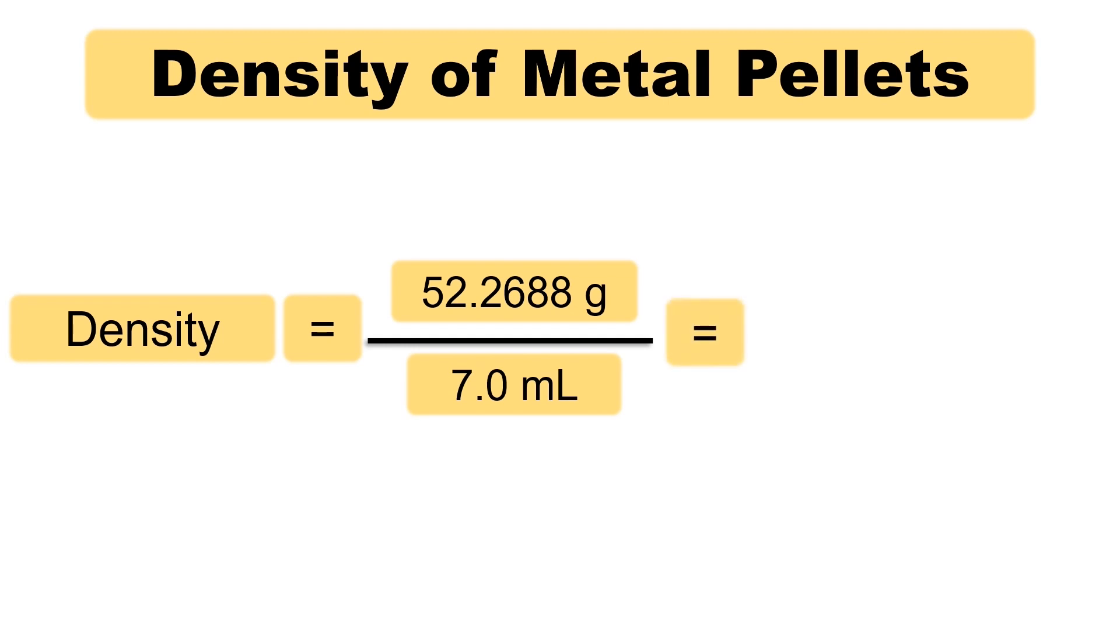The density of our metal pellets is 7.5 grams per milliliter, which is consistent with zinc, 7.14 grams per milliliter. Now, let's find a percent error.